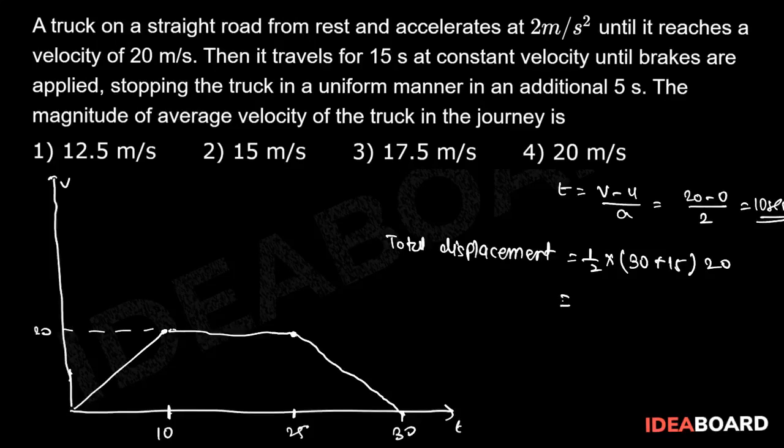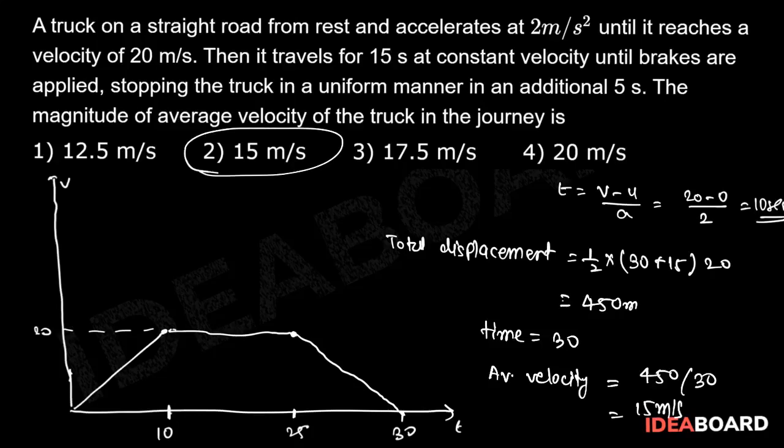And total time taken is 30 seconds, so average velocity will be equal to total displacement divided by total time, which is equal to 450 divided by 30, which is equal to 15 meter per second. So option number 2 is the correct answer of this problem.